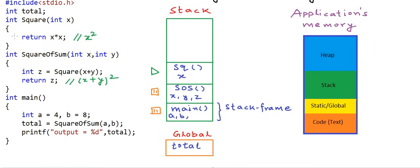This program may not be the best way to implement this logic. I have written it this way so that I can have some nested methods calling each other. Let's say right now we are executing this statement. At this stage, the call stack will have these three methods. Now when this method finishes, we will return back to this particular statement. As soon as the square function returns, it will be cleared from the stack memory and square of sum will resume.